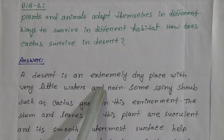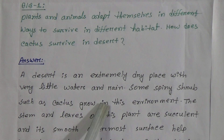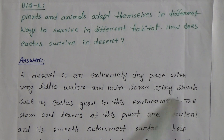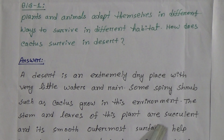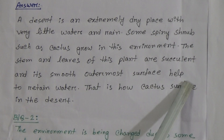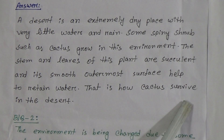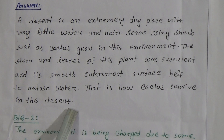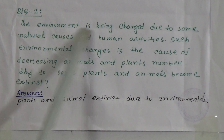Some spiny plants such as cactus grow in this environment. The stem and leaves of this plant are succulent, and its smooth outermost surface helps to retain water. That is how cactus survives in the desert.